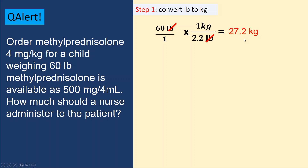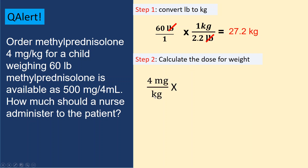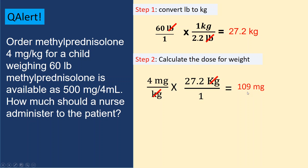Step two: calculate the dose for the weight — 2 milligrams per kg times 27.2 kg. Kilograms cancel out, giving 2 times 27.2, which equals 54.4 milligrams. Wait — the order is 2 mg/kg, so 2 times 27.2 equals 54.4 milligrams, rounded to approximately 55 milligrams for this patient.